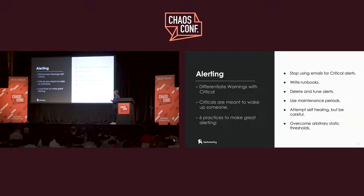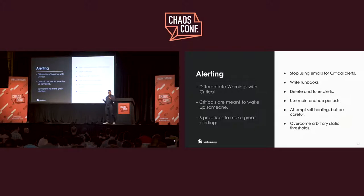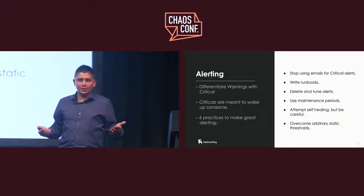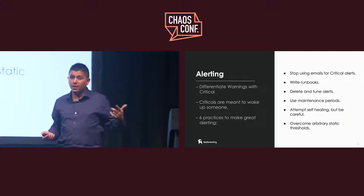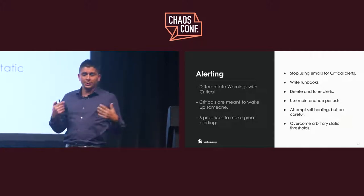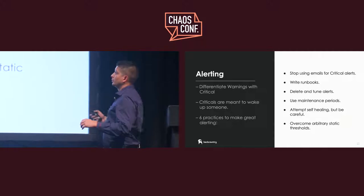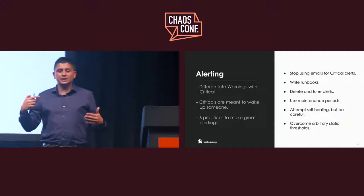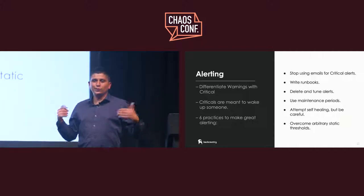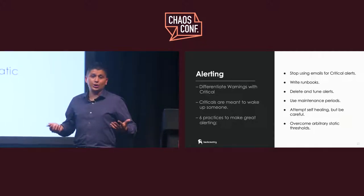First, stop using emails for criticals. Write runbooks — I saw a product that when you look at a critical dashboard, you have customizable links. So when you get paged, you immediately have links about the API: what does it do, what problems have been seen, maybe post-mortems linked there. That's valuable for whoever is resolving the problem. Delete and tune alerts: this is an iterative process — you never write perfect alerting once. You'll find yourself deleting things that aren't useful as things change.